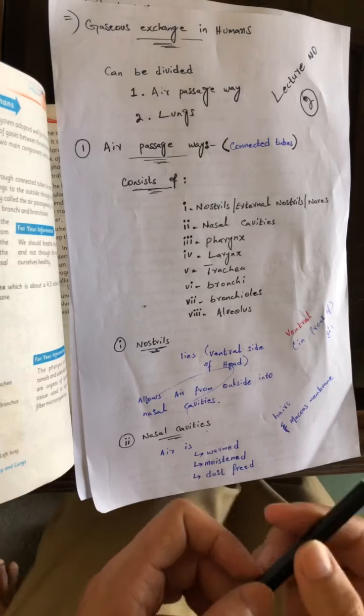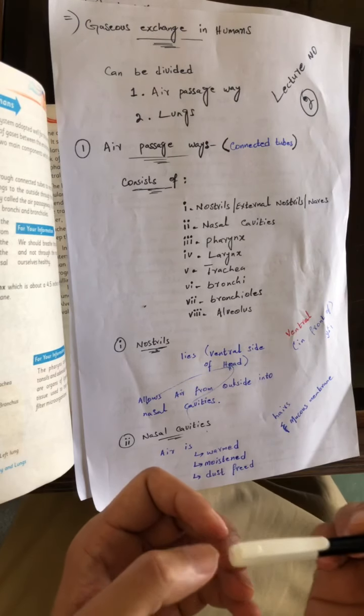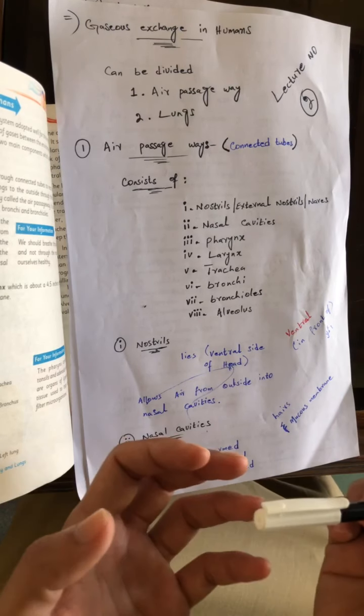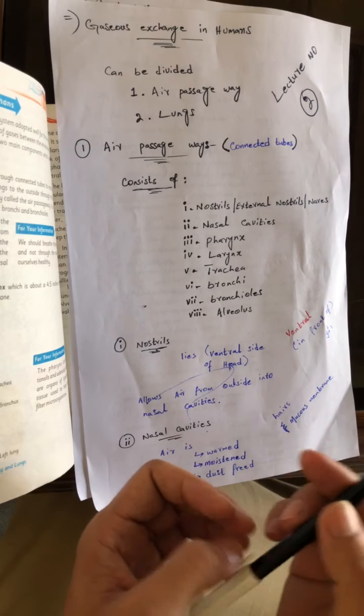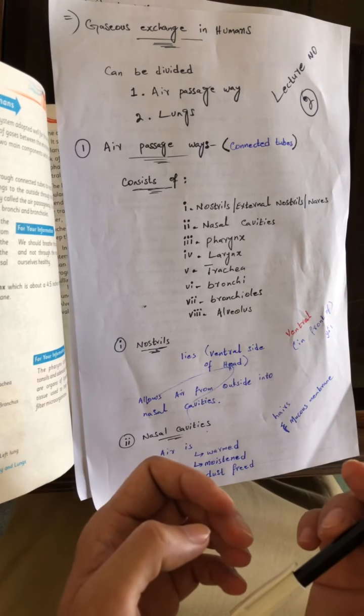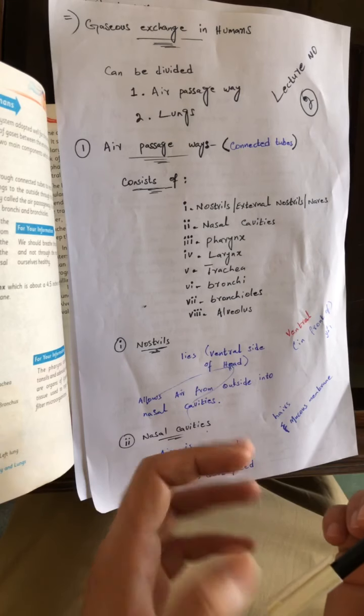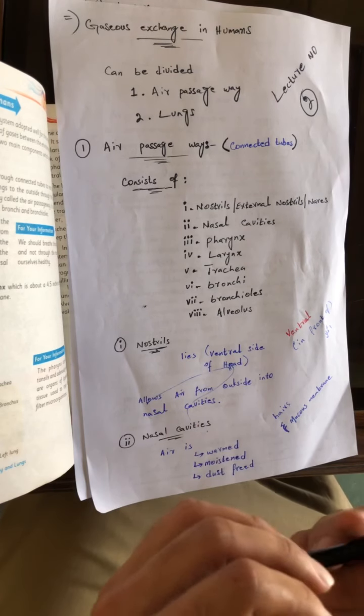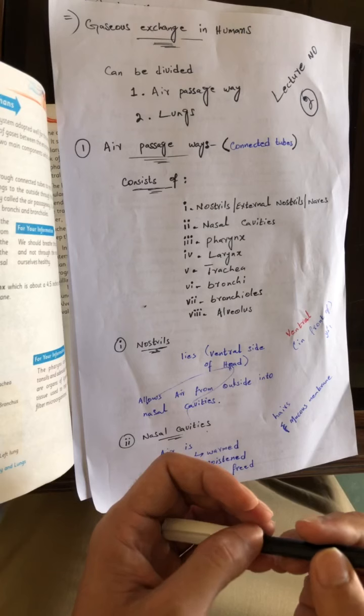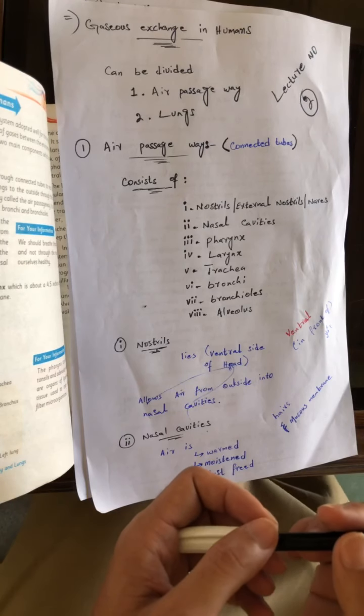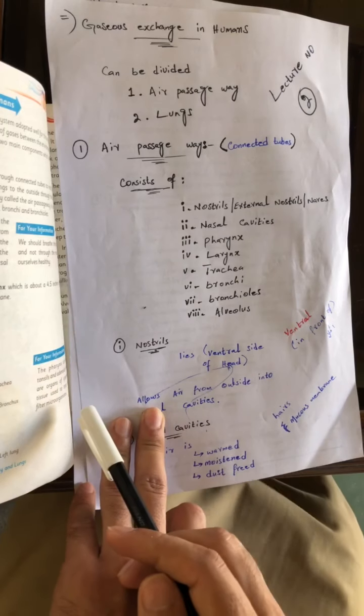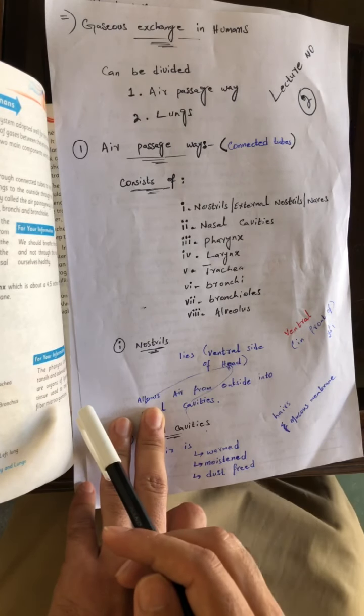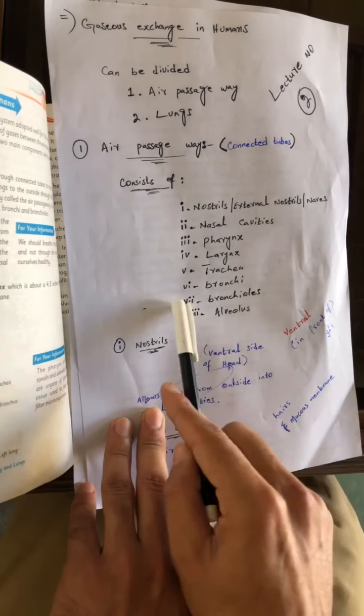What are the air passageways? Air passageways are basically connected tubes. When we take the air passageways, we get the air into the lungs, and in the lungs, gases exchange. So the way through the air passageways is a step-by-step organ, which is called connected tubes.